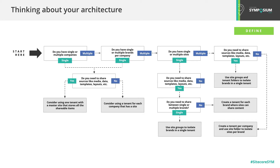Notice that this slide is tagged 'Define' in the top right corner, illustrating the phase Anna spoke about previously. During the Define phase, you will determine the business requirements for the SXA platform, which will very likely influence the way you set up your site and tenant architecture. Things like multilingual sites, different brand sites, shared content, security, and governance all play a vital role. To help you determine the preferred architecture, we created a flowchart which can be found on the documentation site.